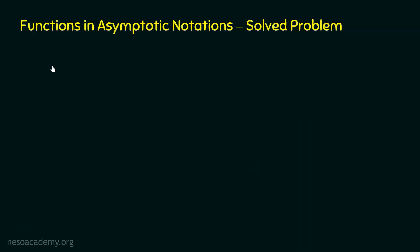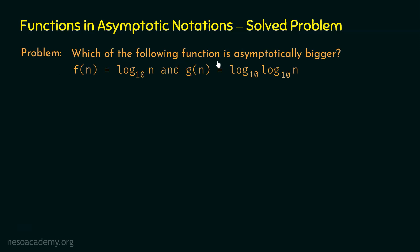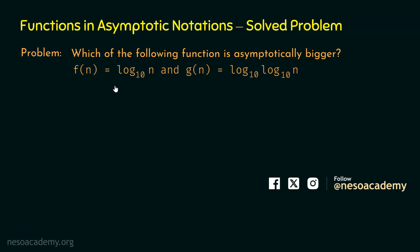Here is the problem. Which of the following functions is asymptotically bigger? Is f(n) asymptotically bigger than g(n), or is it the case that g(n) is asymptotically bigger than f(n)? f(n) is equal to log n base 10, and g(n) is equal to log(log n base 10) base 10. Which one is bigger?